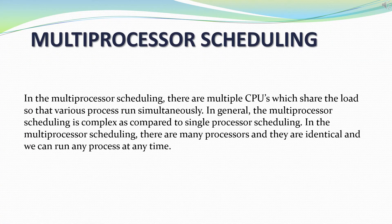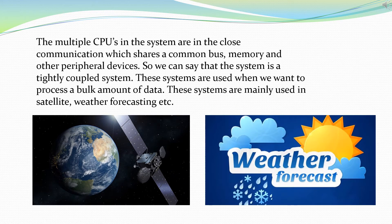What is multiprocessor scheduling? In multiprocessor scheduling, there are multiple CPUs which share the load so that various processes run simultaneously. The multiprocessor scheduling is complex as compared to single processor scheduling. There are many processors and they are identical and we can run any process at any time.